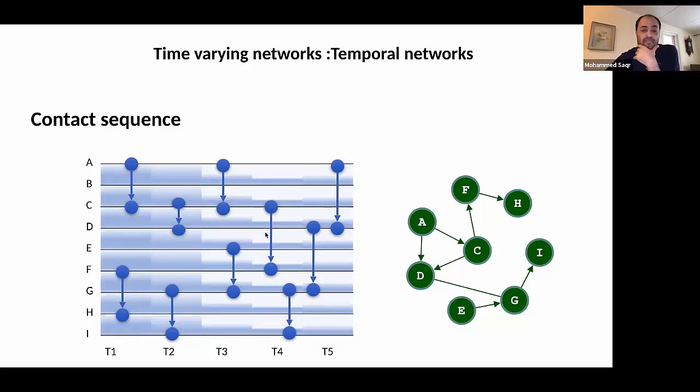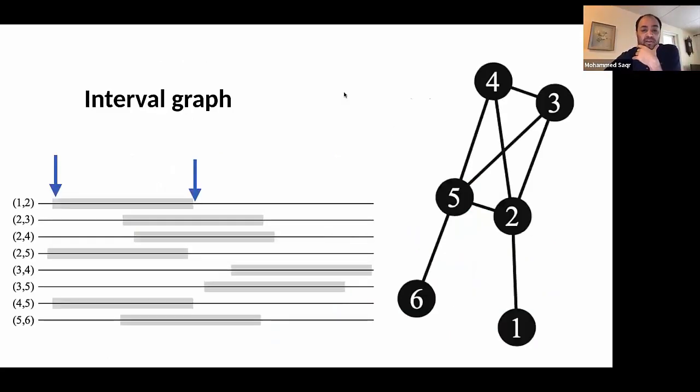The other type of network is what we call an interval graph. An interval graph takes into account the duration of the interaction. For example, there has been an interaction between node 1 and node 2, and that has a duration. This interaction has formed or activated at this moment and deactivated at that moment, according to the terminology you might be liking to use. This picture is taken from the book of temporal networks by Peter Holme and Jari Saramaki.